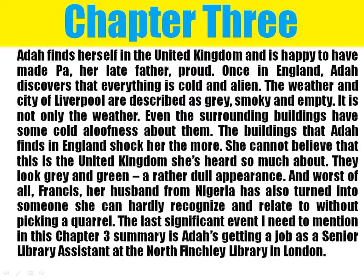When Adah arrives at Francis's place, she cannot believe what she sees. The room is too small, there is no kitchen and no toilet — they have to use a public toilet and cook in one corner of the room. When Adah questions Francis about the poor accommodation, Francis reminds her that she is a second-class citizen, and that all Nigerians and Africans in the UK are second-class citizens not treated like white people. In Chapter 3, Francis also becomes very hostile to Adah — always getting angry and attempting to physically assault her.